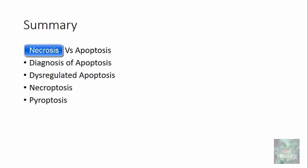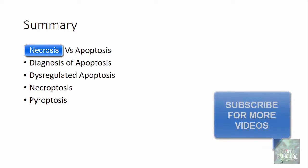In summary, in this short tutorial we discussed the differences between necrosis and apoptosis, learned how to diagnose apoptosis, talked about the disorders associated with dysregulated apoptosis, and understood the concepts of necroptosis and pyroptosis. Thank you.